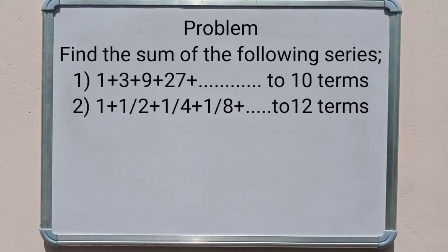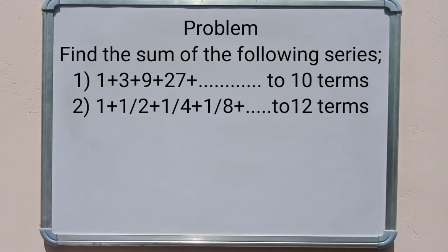Find the sum of the series: Problem 1 — 1 + 3 + 9 + 27 to 10 terms. Problem 2 — 1 + 1/2 + 1/4 + 1/8 to 12 terms.